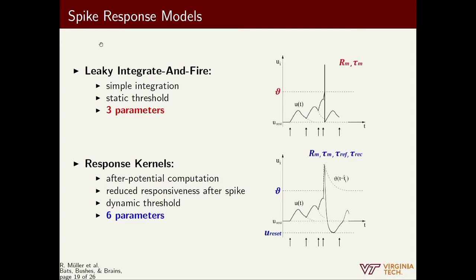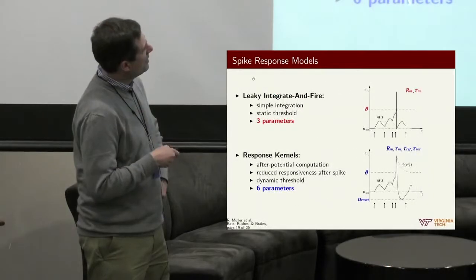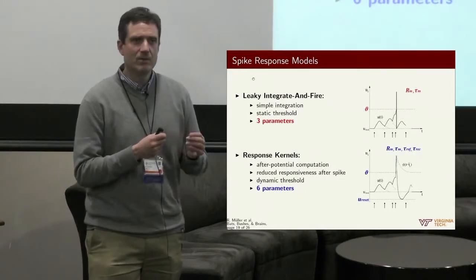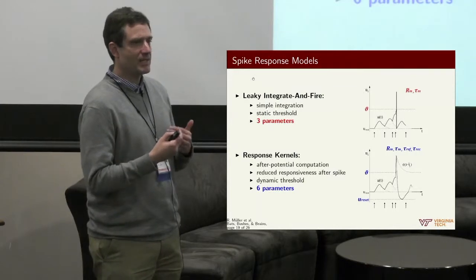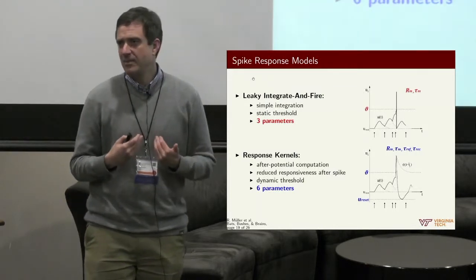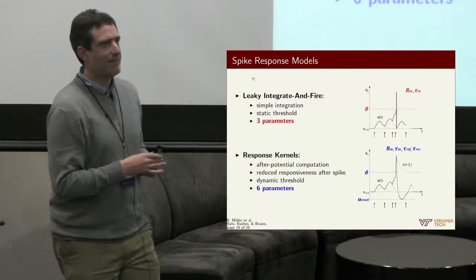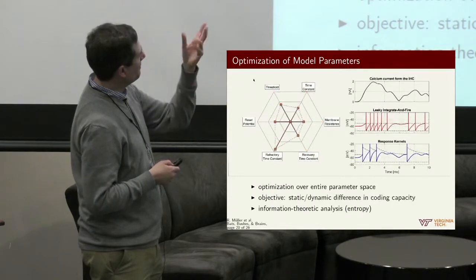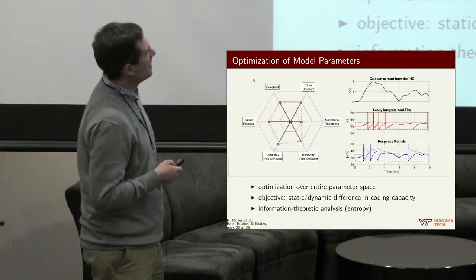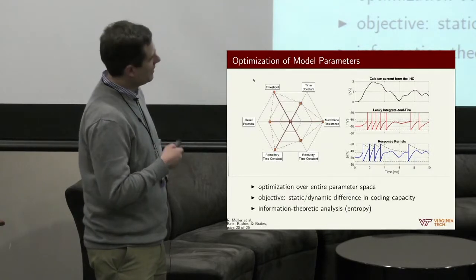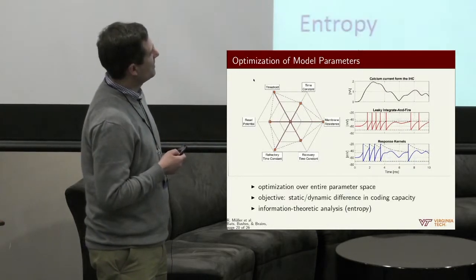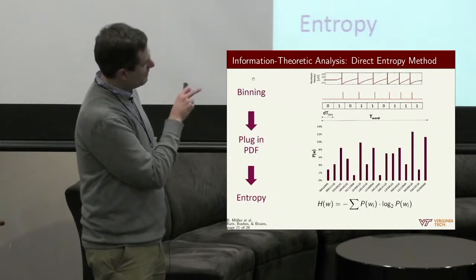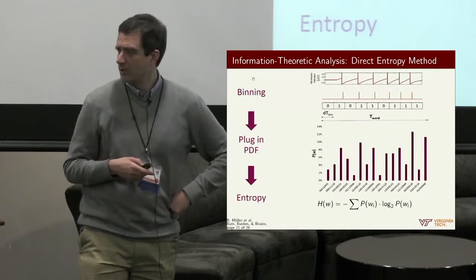And then we have surveyed two, still fairly simple, but different complexity spike model. Leaky integrate and fire, where we just have three parameters, and then response kernels, where we have six parameters. And play with those, and see can they actually, these different models, help us to preserve that information coding capacity that the peripheral dynamics gives us. So here's sort of the example how we play with those parameters, and then of course they get different responses from the spike models. And so we have done that 220,000 times. What we have done is we just look at entropy as a way to gauge coding capacity.